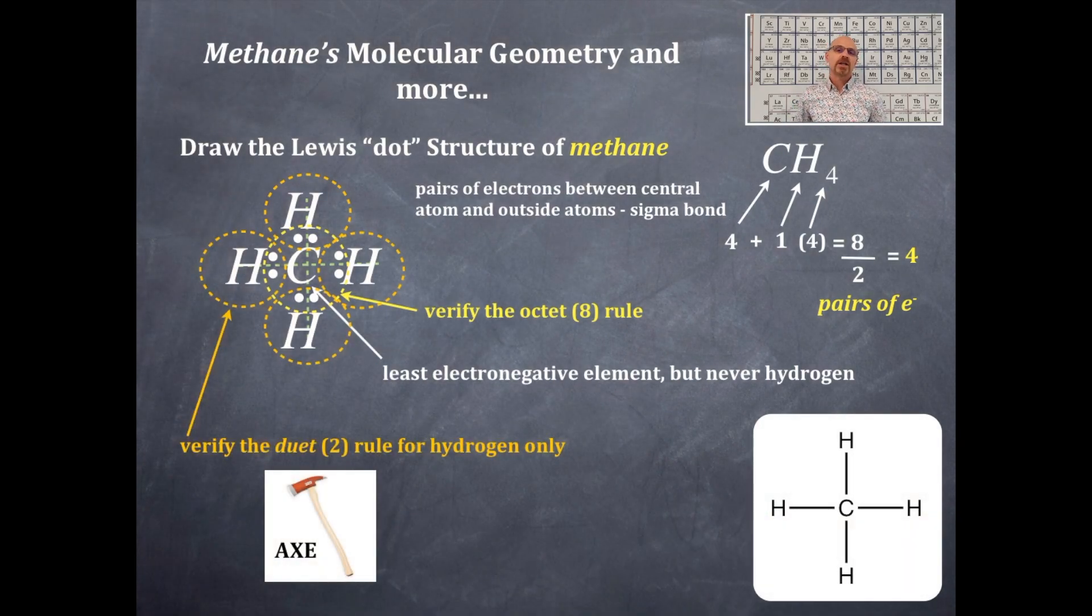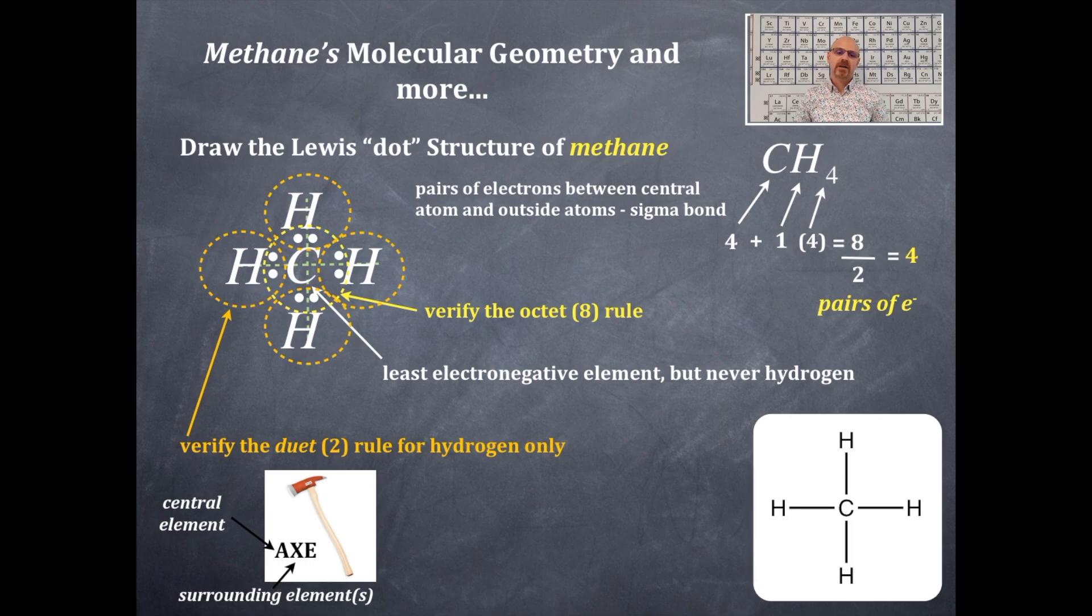Now we'll do AX notation. That's the central element, the surrounding elements, and the lone pairs on the central element. The central element is A, so carbon is A. The outside elements are X's. How many hydrogens on the outside? Four. So there are four X's. Are there any lone pairs on the central element? No. Therefore, you get AX4 structure.